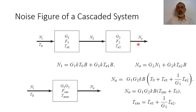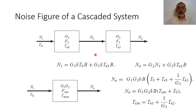The output of the first network in terms of the input noise would be G1·K·T0·B, which is the amplification of the input noise, plus the internal noise, which is G1 multiplied by K multiplied by the equivalent noise temperature TE1 multiplied by the bandwidth B. This output of port 1 is also the input noise for the second network.